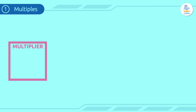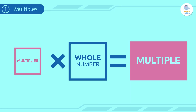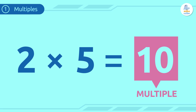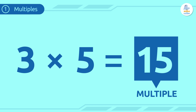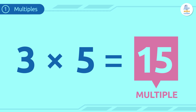A multiple is the product of a number multiplied by any other whole number. For example, 10 is a multiple of 2 because 2 times 5 is 10. 15 is a multiple of 3 because 3 times 5 is 15. We use multiples all the time in math — they're super important!